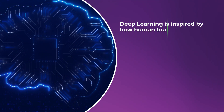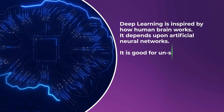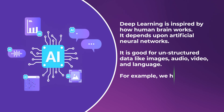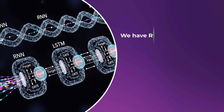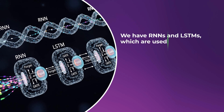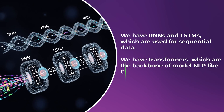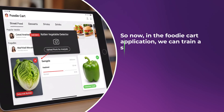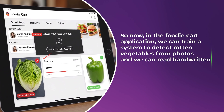Now it's time to understand deep learning. Deep learning is inspired by how the human brain works — it depends on artificial neural networks. It is good for unstructured data like images, audio, video, and language. For example, CNNs are used for image recognition; RNNs and LSTMs are used for sequential data; and transformers are the backbone of modern NLP models like ChatGPT. In the FoodiCard application, we can train a system to detect rotten vegetables from photos and read handwritten shopping lists.